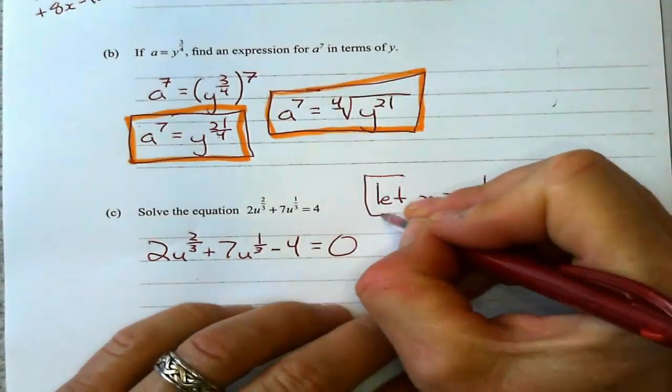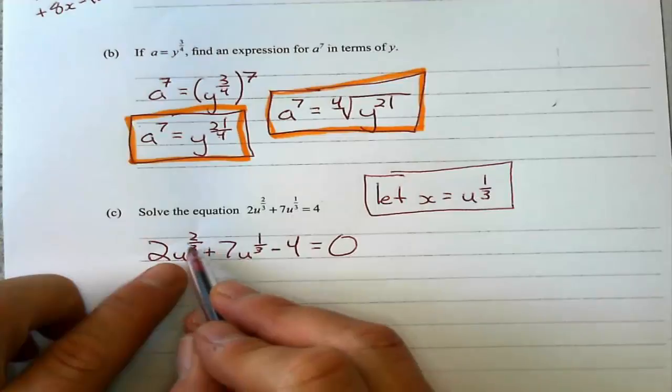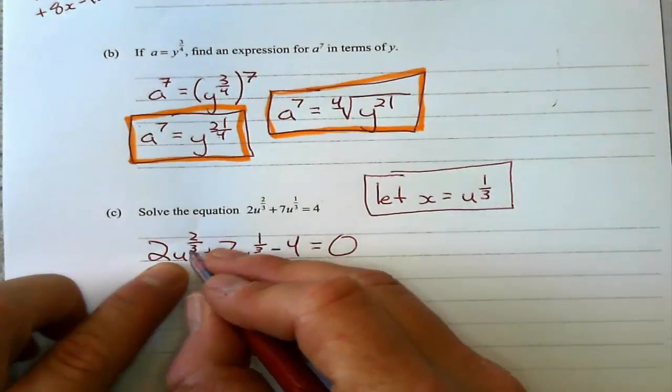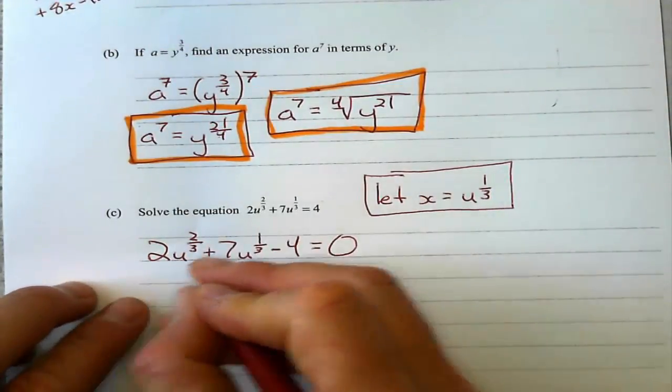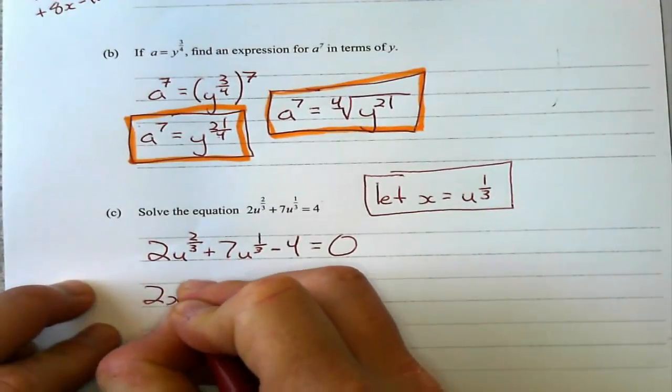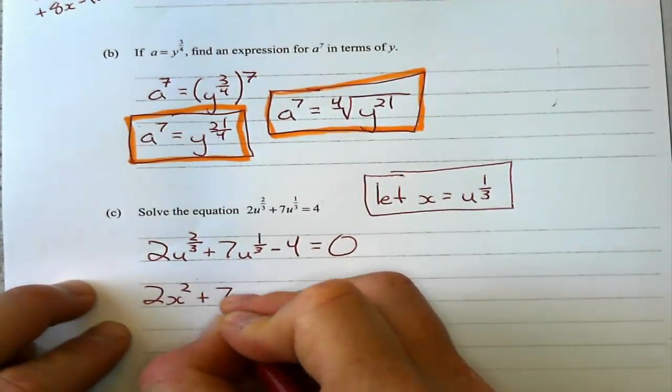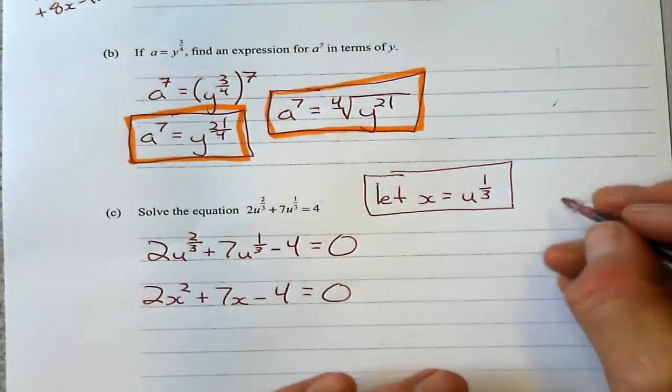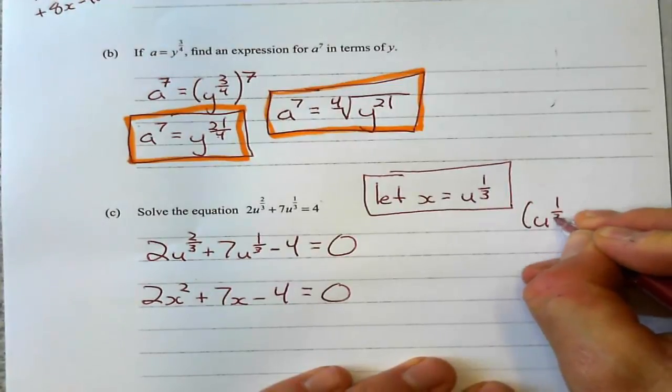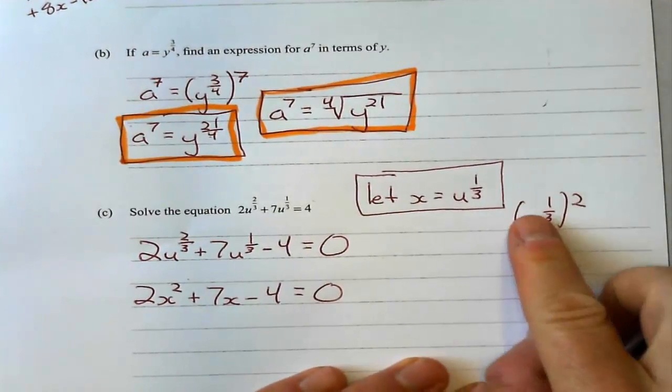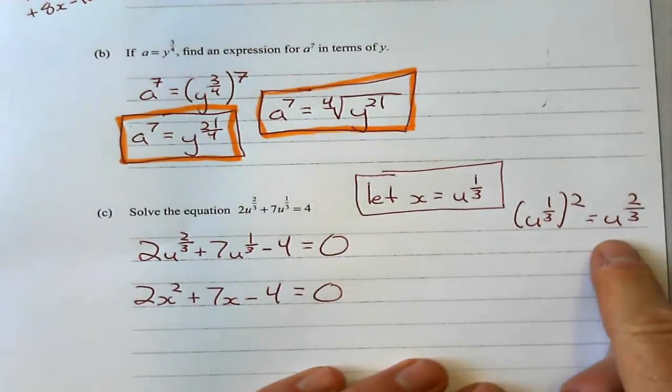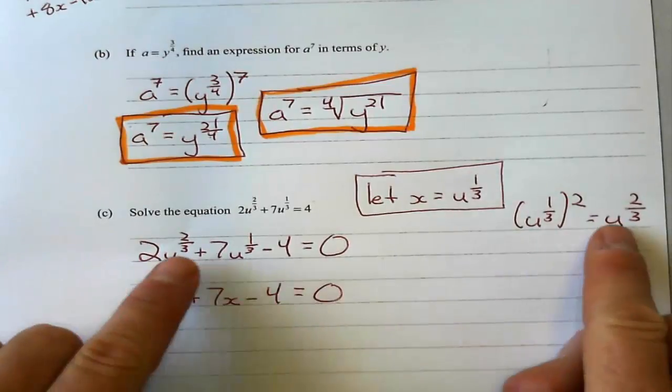Now, when I do this substitution here, keep in mind, 2/3 there is this squared. If I square this, I get 2/3. So this is going to become, using this substitution, 2x squared plus 7x minus 4 equals 0. So just remember, u to the power of 1/3 squared, a power to a power gets multiplied, so that equals u to the power of 2/3.